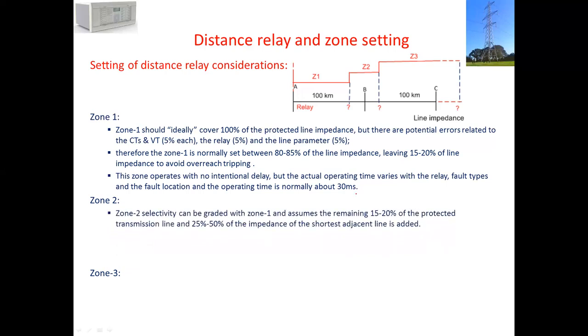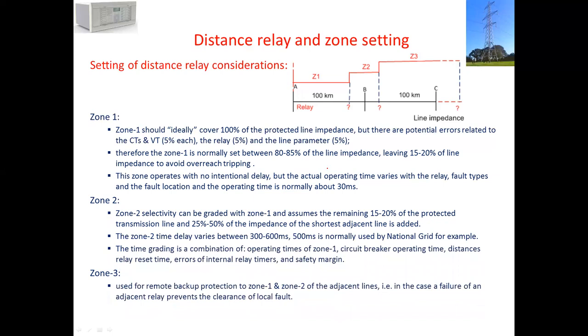Zone 2 protects 100% of line A to B plus around 25% to 50% of the next line. The time gradient is a combination of zone 1 plus circuit breaker opening time, instantaneous relay reset time, error of the internal relay timer, and safety margin. This all adds up to around 500 milliseconds, between 400 to 600 milliseconds. 500 milliseconds is normally used.